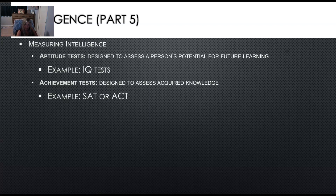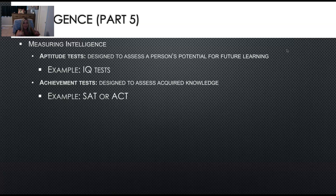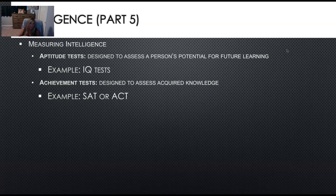Your IQ test — that is your aptitude test. Know that an IQ test is an aptitude test. And your achievement tests are like your SAT and your ACT. So just know the difference between the two. If I were to ask you what is an example of an aptitude test, know that an IQ test would be aptitude. And if I asked you what is an example of an achievement test, SAT and ACT would be on there.